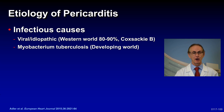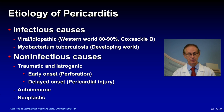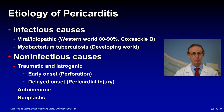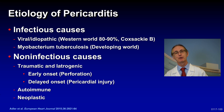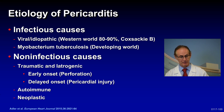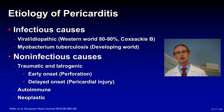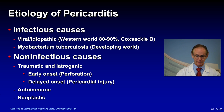We have to remember there are newer, non-infectious causes that are very common now. Traumatic and iatrogenic causes include early-onset perforation — for example, during a heart catheterization or pacemaker placement. You get blood in the pericardial space, which is serious and can cause pericarditis. Or there can be delayed onset, such as Dressler syndrome after a heart attack, after open heart surgery, after valve surgery, after a pacemaker, or other injuries.